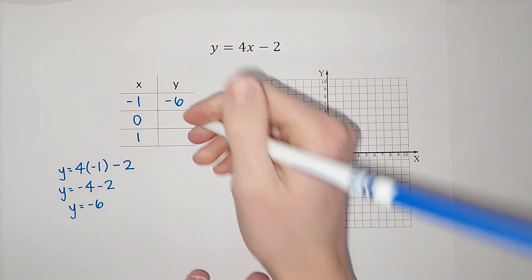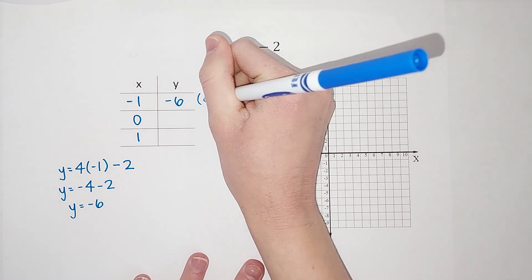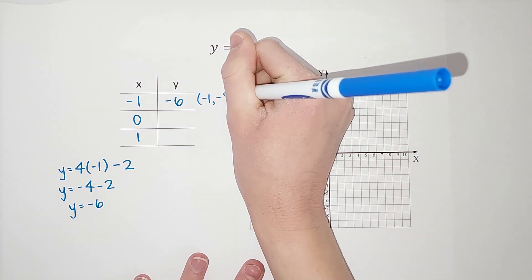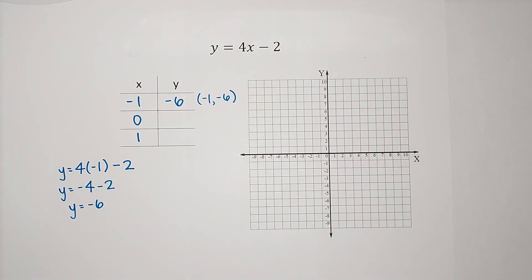That is my first point. I could write it as an ordered pair, negative 1, negative 6, if that looks more familiar.